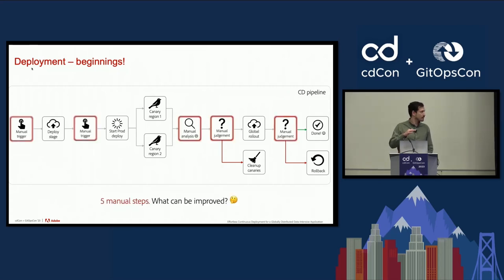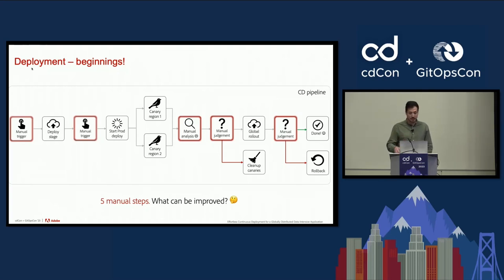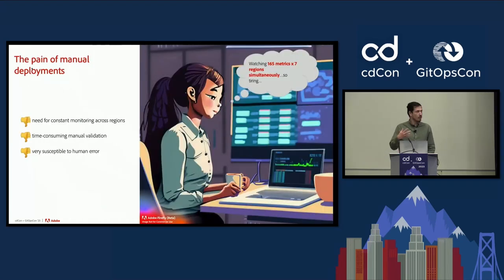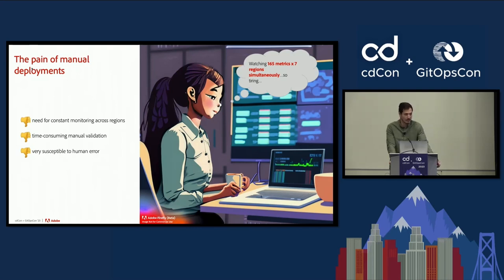Five out of the ten pipeline stages require an engineer's input, so we think we can do better. Manual deployments can be a frustrating and exhausting experience for the release engineer, as they have to track 165 metrics in each of the seven regions, so the possibility of missing something is pretty high.